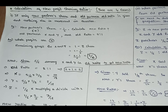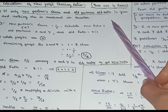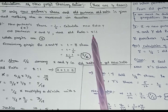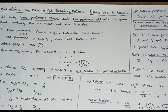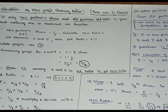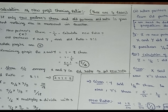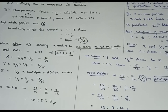For the first example, the new partner Z's share is 1 by 6. Old partners are X and Y, and their old ratio is 2 is to 1. Now we will talk about the new profit sharing ratio. First, we consider the whole profits, then Z's share, and then we talk about the new profit sharing ratio.